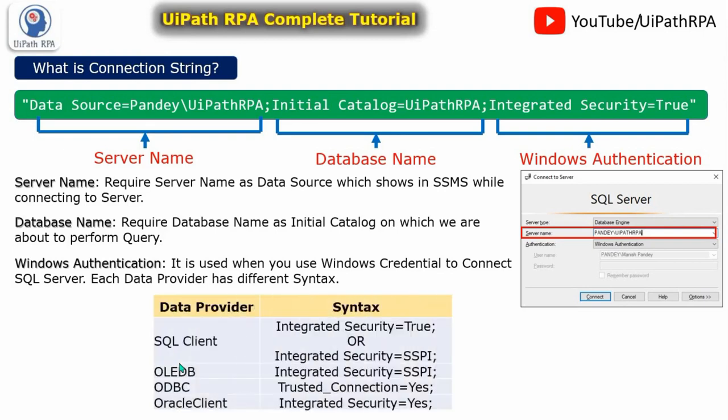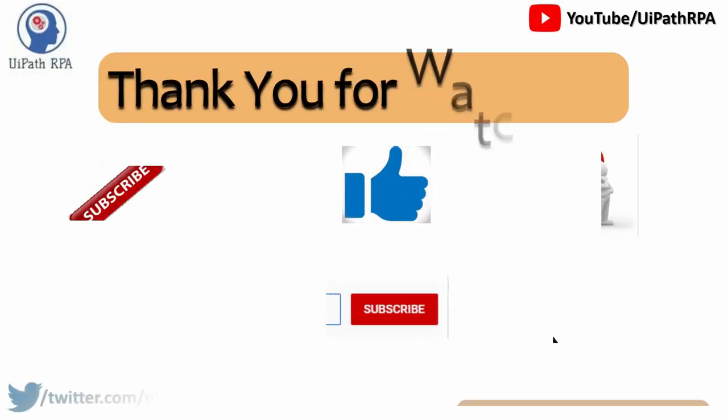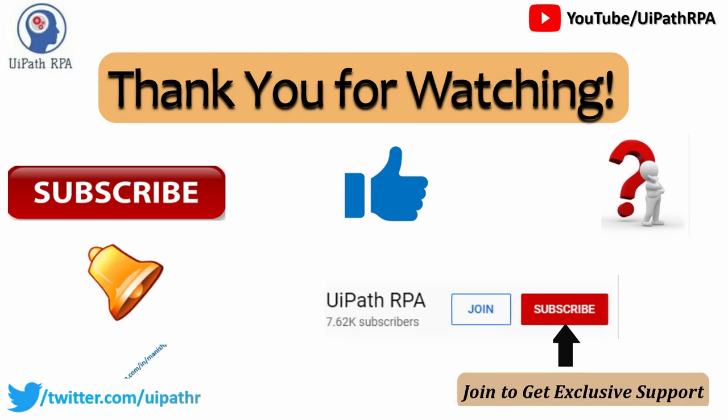We have four data providers: SQL Client, OLEDB, ODBC, and Oracle Client. If you are using SQL Client for SQL Server, the syntax is integrated security equal to true, or integrated security equal to SSPI. Similarly, if you have a different data provider, the syntax will also be different across SQL Client, OLEDB, ODBC, and Oracle Client.